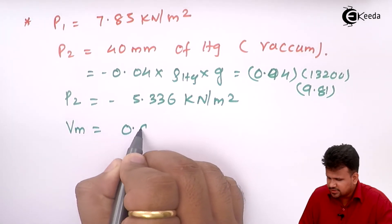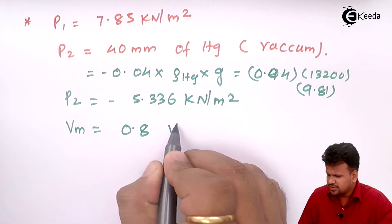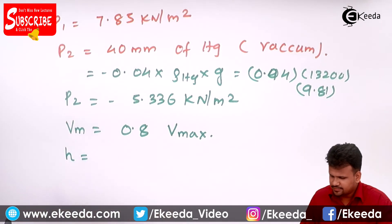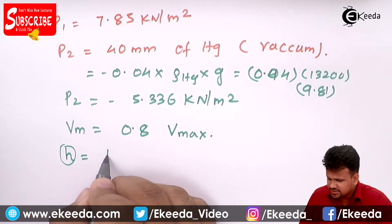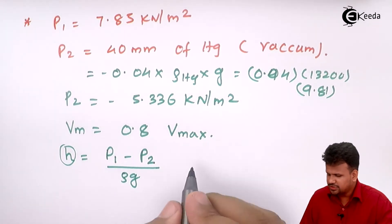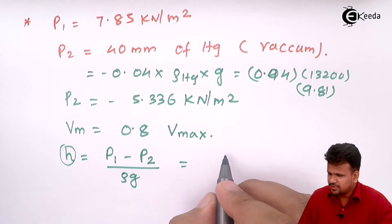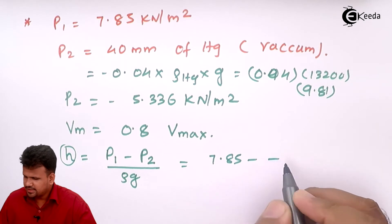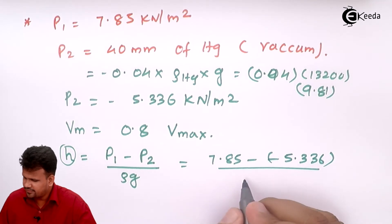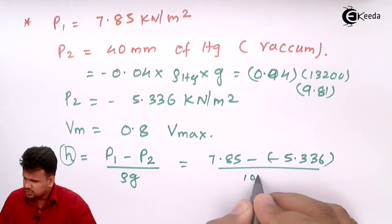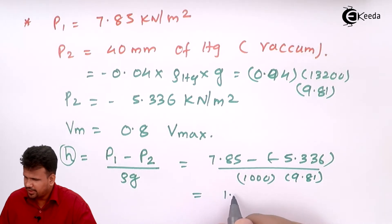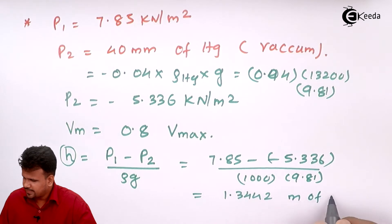The mean velocity is 0.8 times the central maximum velocity. The dynamic head h is given as the stagnation pressure minus the static pressure, divided by rho times g. This equals 7.85 minus of 5.336, divided by rho of water into 9.81, which comes out to be 1.3442 meters of water.